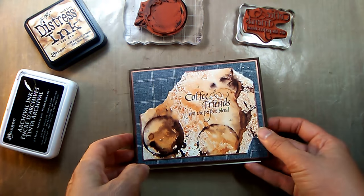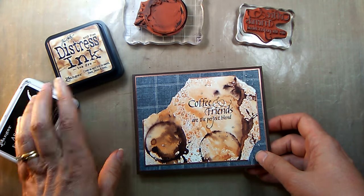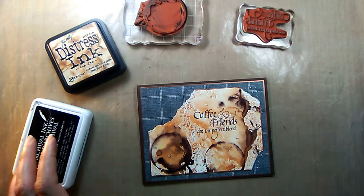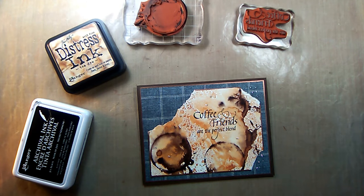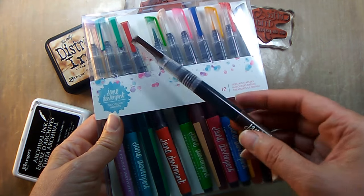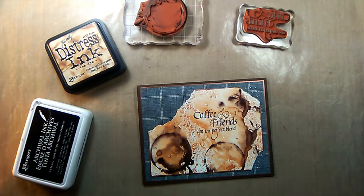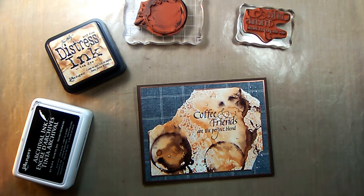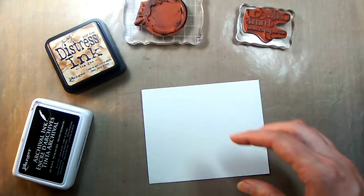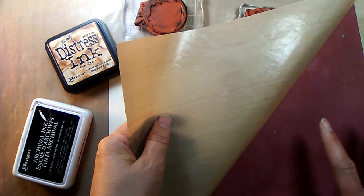For the card I also used distress tea dye ink, archival ink in black for the quote, and mermaid markers by Jane Davenport. I use the color reef.